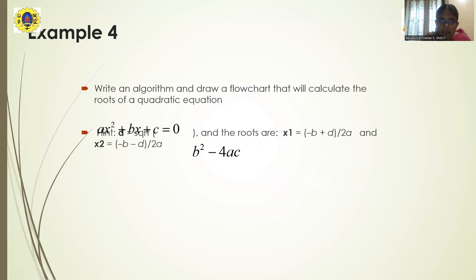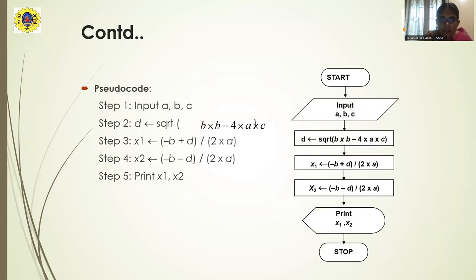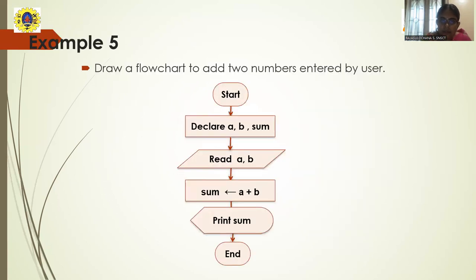Here are a few more examples you can try on your own. The fourth example is to write an algorithm and draw a flowchart to calculate the roots of a quadratic equation. A quadratic equation is of the form: ax² + bx + c = 0. The roots are found using the formula: root = (−b ± √(b² − 4ac)) / 2a. Try writing the algorithm and drawing the flowchart for this on your own.